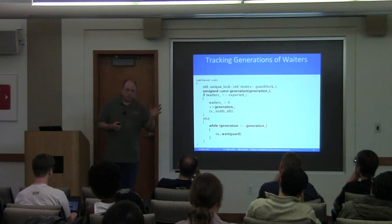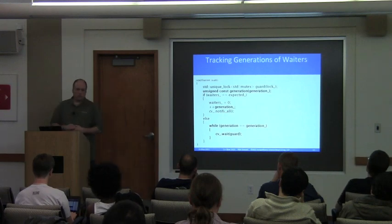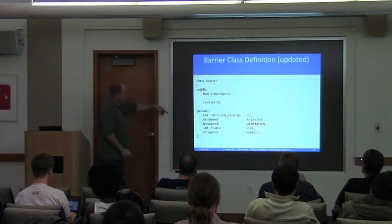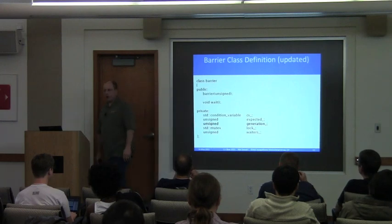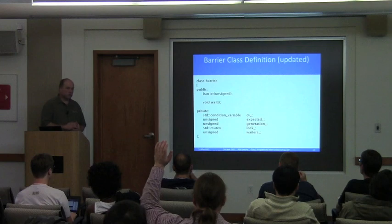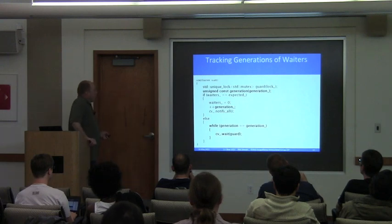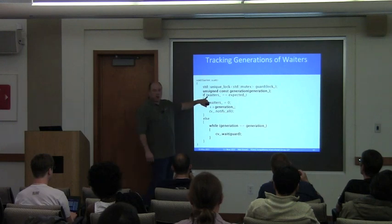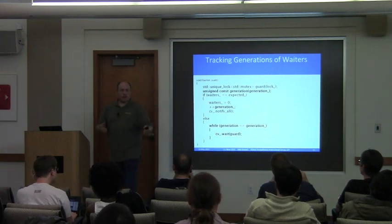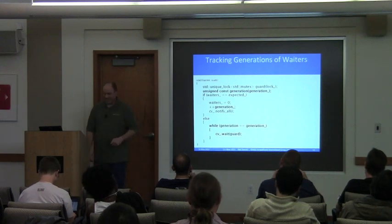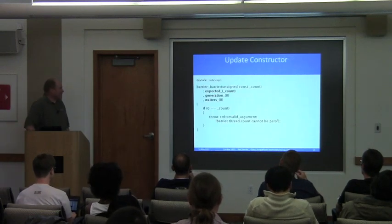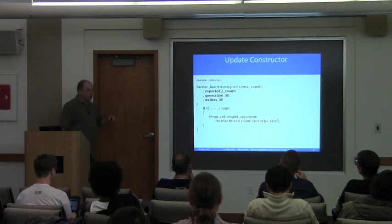Audience correction: waiters needs an increment (++waiters) — there was a typo on that slide. We update the class definition to add the generation variable, update the constructor to initialize everything, and now you've got a barrier class. Moving on to periodic invocation: you want to invoke some callable with a fixed interval in between. The callable runs, there's a fixed interval, it runs again. Or you might want it to start at a regular interval regardless of how long the task takes.